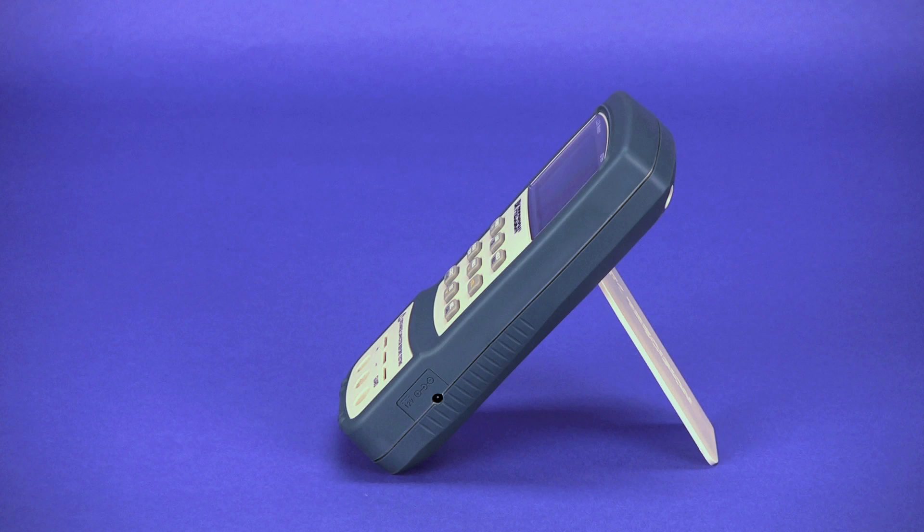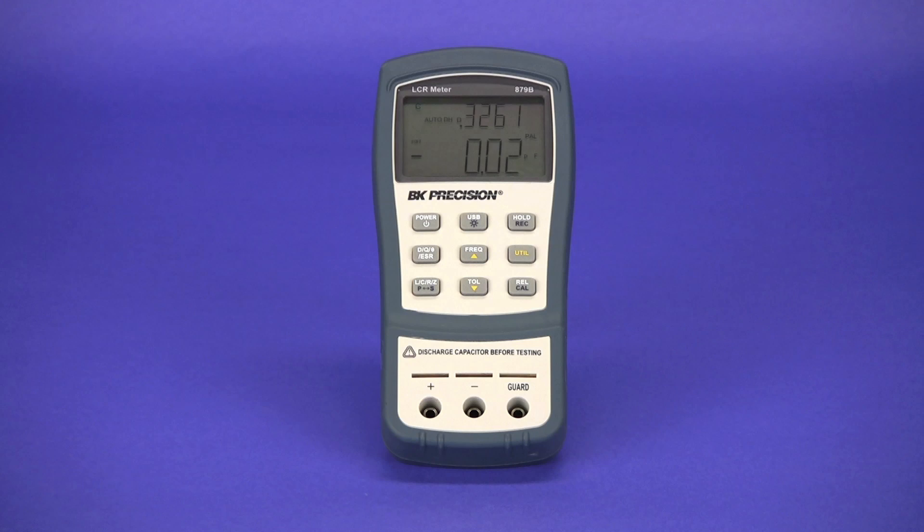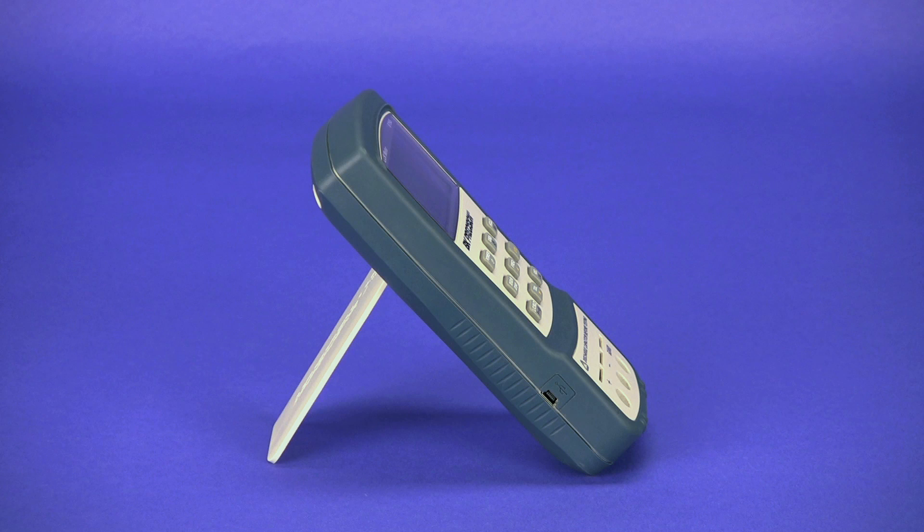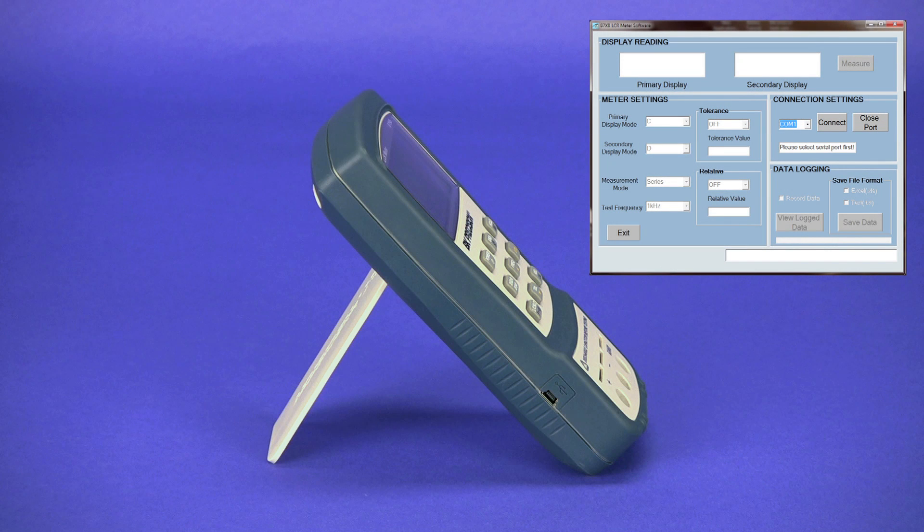The sides of the meter house the AC adapter input and the mini-USB connector for connecting to a PC, allowing communication with free software available for download from bkprecision.com.